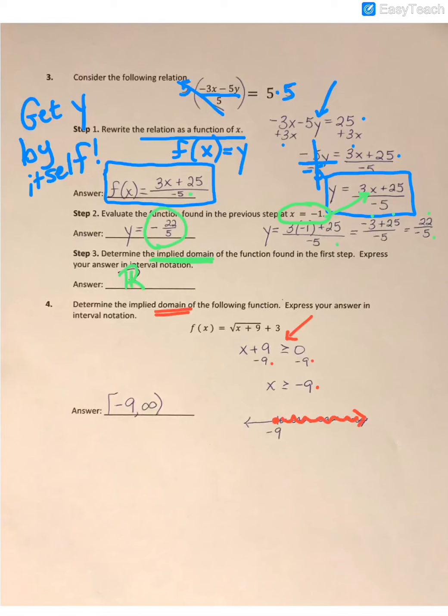So in interval notation, as I come from left to right, I start at -9. Because it touches, I have to make sure I put the square bracket on the left side. And then when it just keeps going to the right, we call that positive infinity. And since we can never touch positive infinity, we close off with a parenthesis.